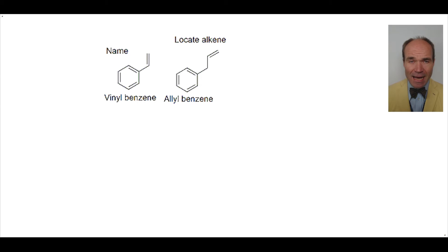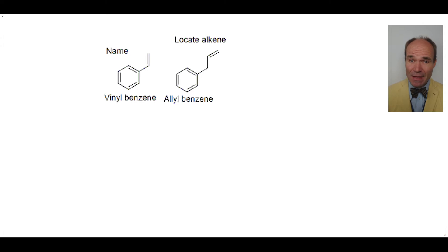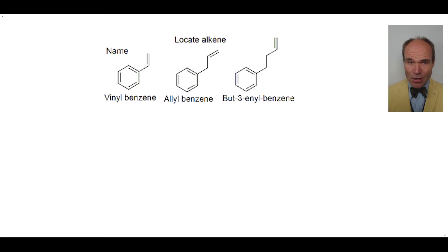Vinyl and allyl are IUPAC terms, so vinyl benzene and allyl benzene are IUPAC names. Next, with an additional tetrahedral carbon in between the alkene and the other functional group, this molecule is called but-3-enyl benzene, not homoallyl benzene.